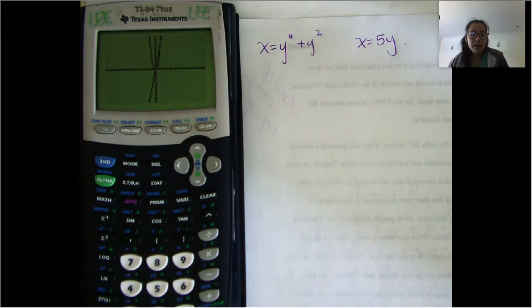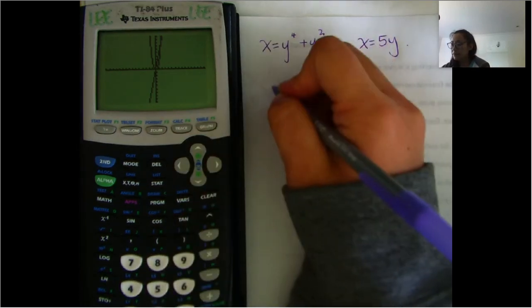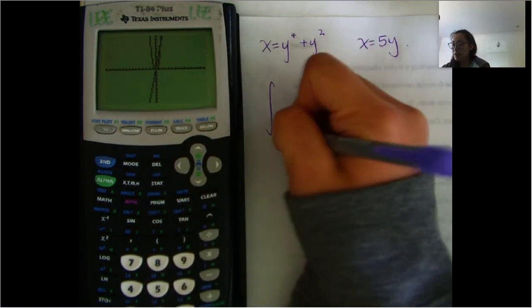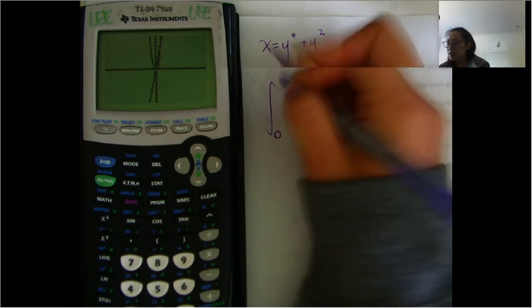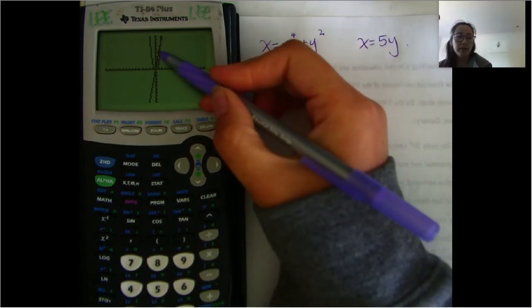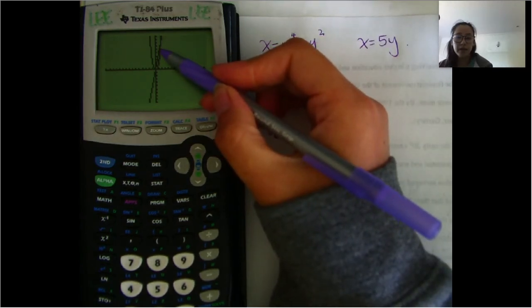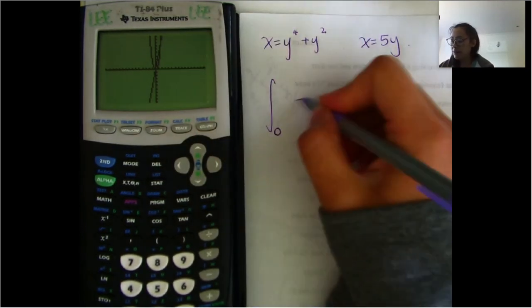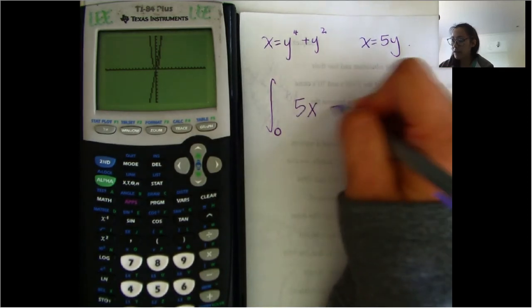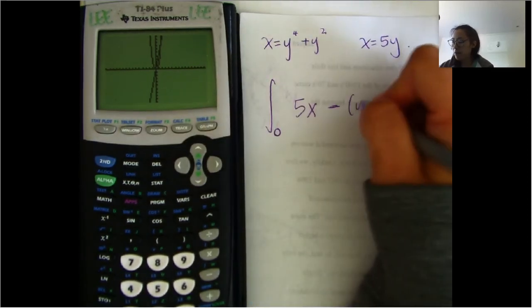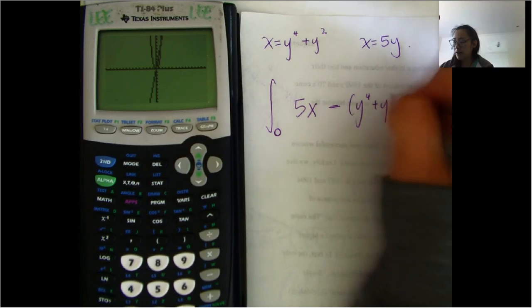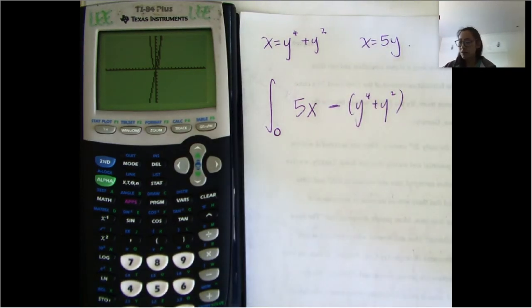When you look at that graph, you can see that the first intersection point is (0, 0). So when we're writing this integral, we're going from zero up to some upper point. It'll be the integral of 5x — since that one's on top — minus x to the fourth plus x squared, since that one's on bottom.